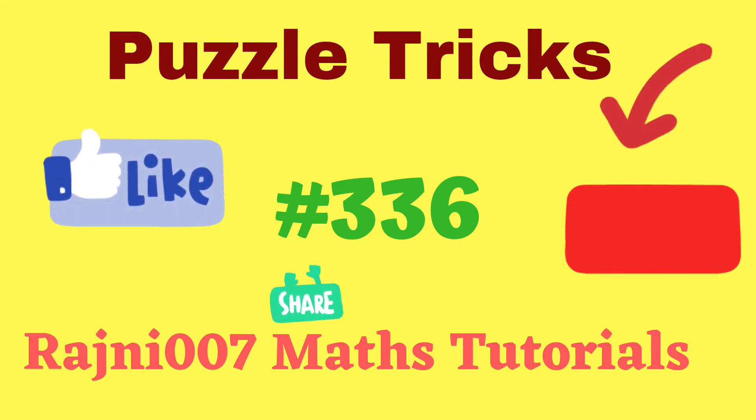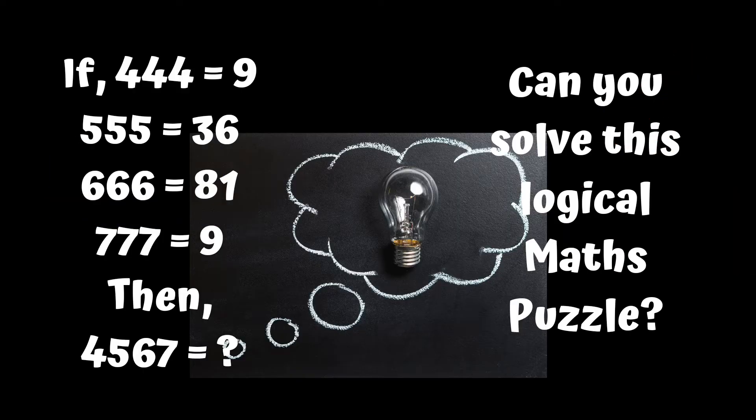If triple 4 value is 9, triple 5 value is 36, triple 6 value is 81, triple 7 value is 9, then what will be the value of 4567?